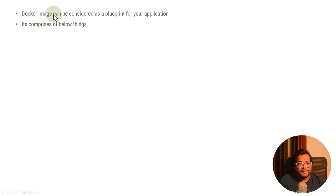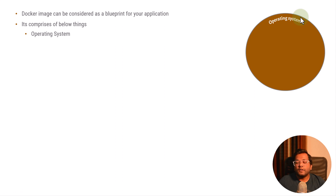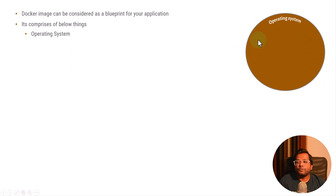Whenever we say Docker image, it comprises of the following things. The first is the operating system. If you see this whole image, the topmost or outermost layer is called the operating system. Whenever a Docker image is created, we first need to specify which operating system this Docker image has. It can have Ubuntu, Alpine, Windows, Mac, or anything. You need to specify that operating system, and that is what the first or outermost layer of our Docker image represents.